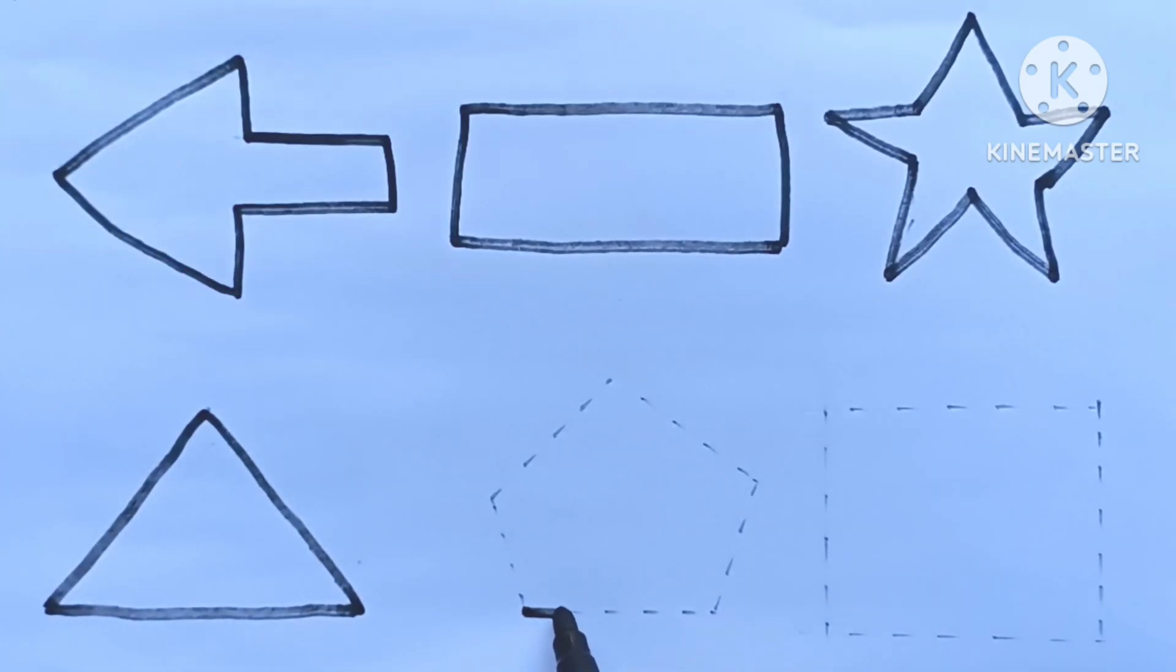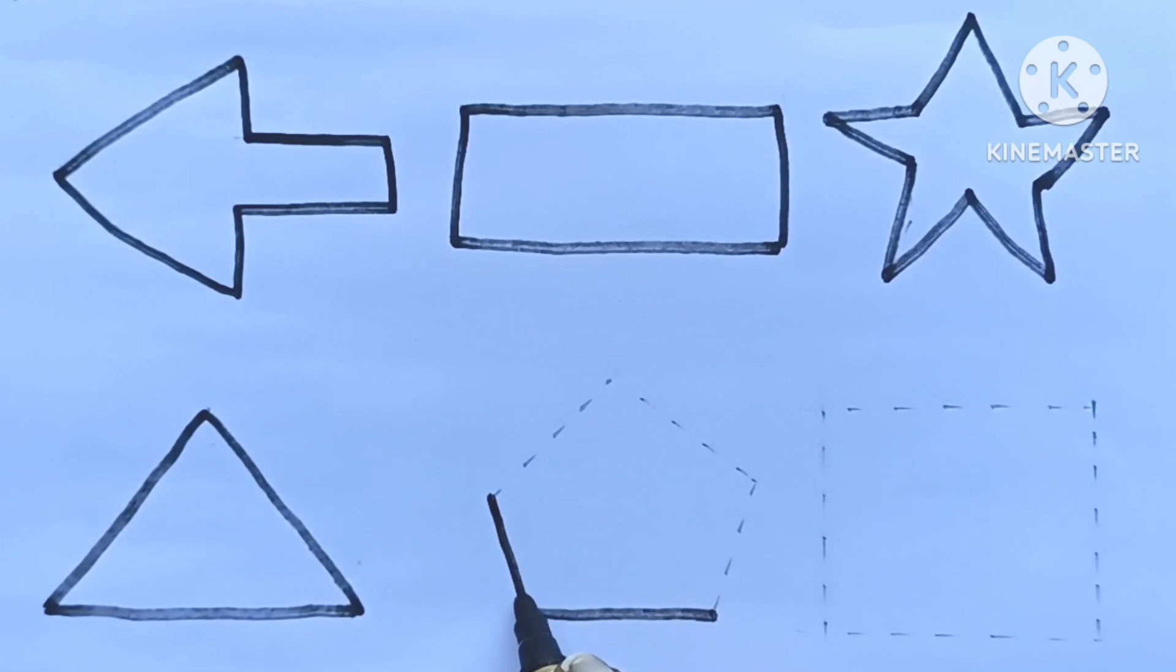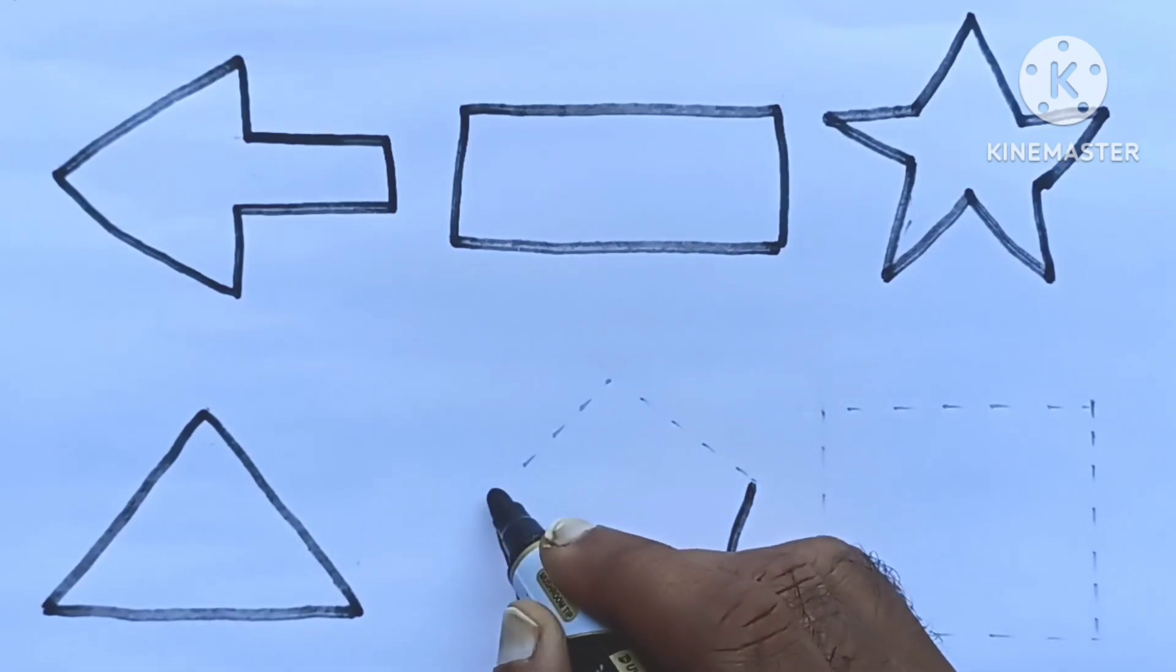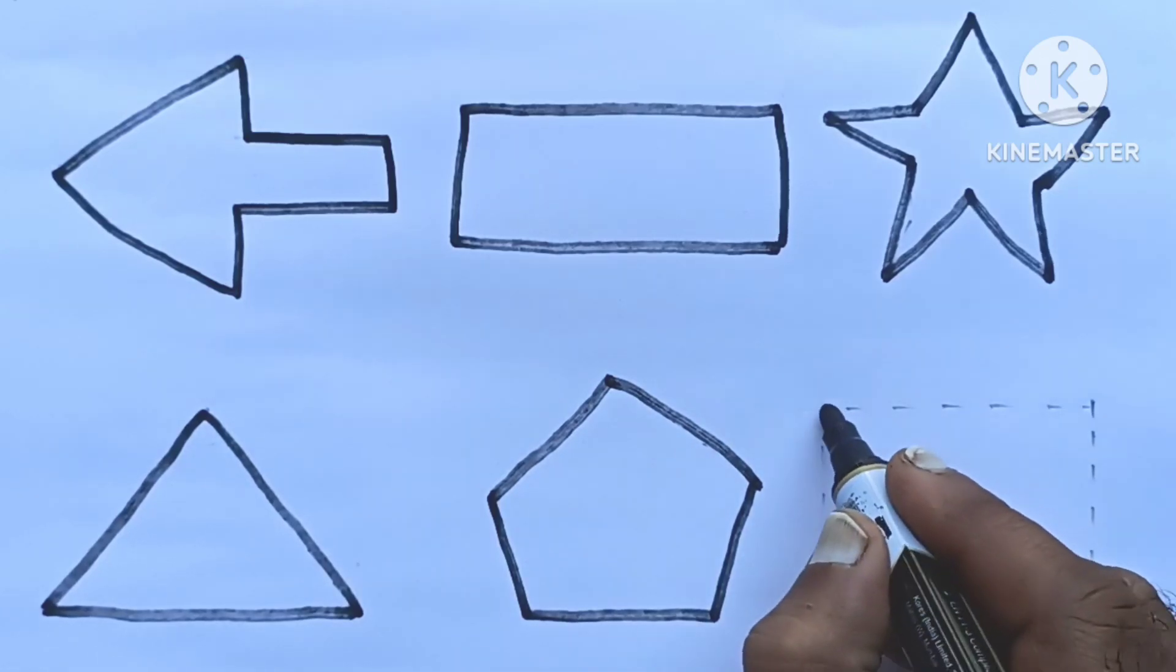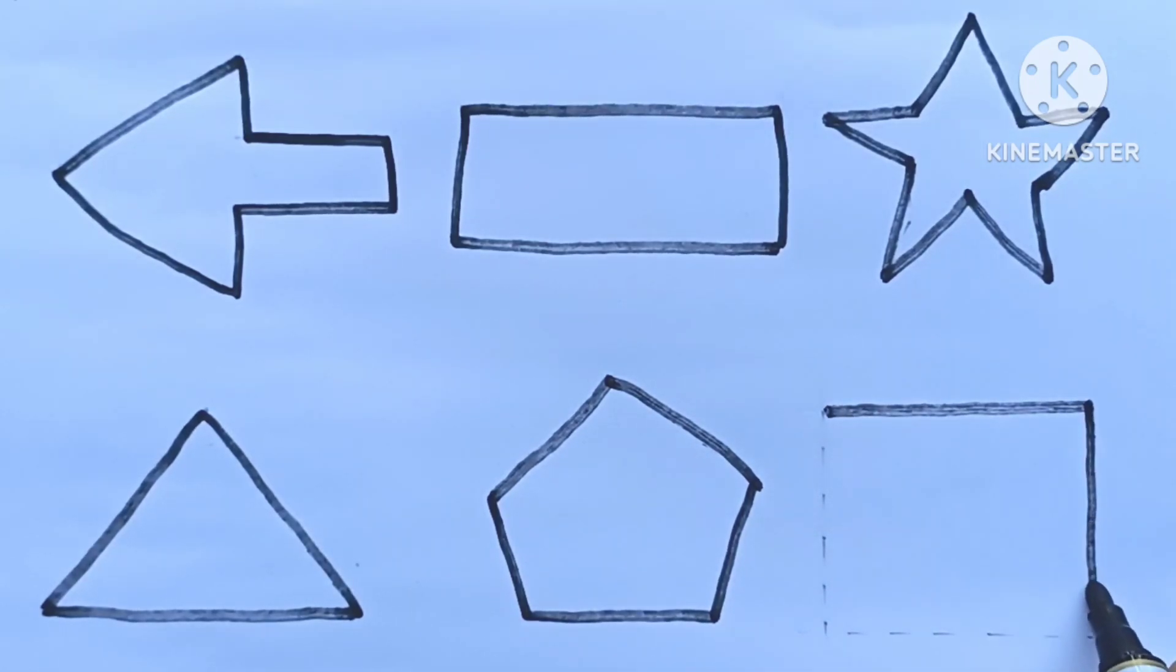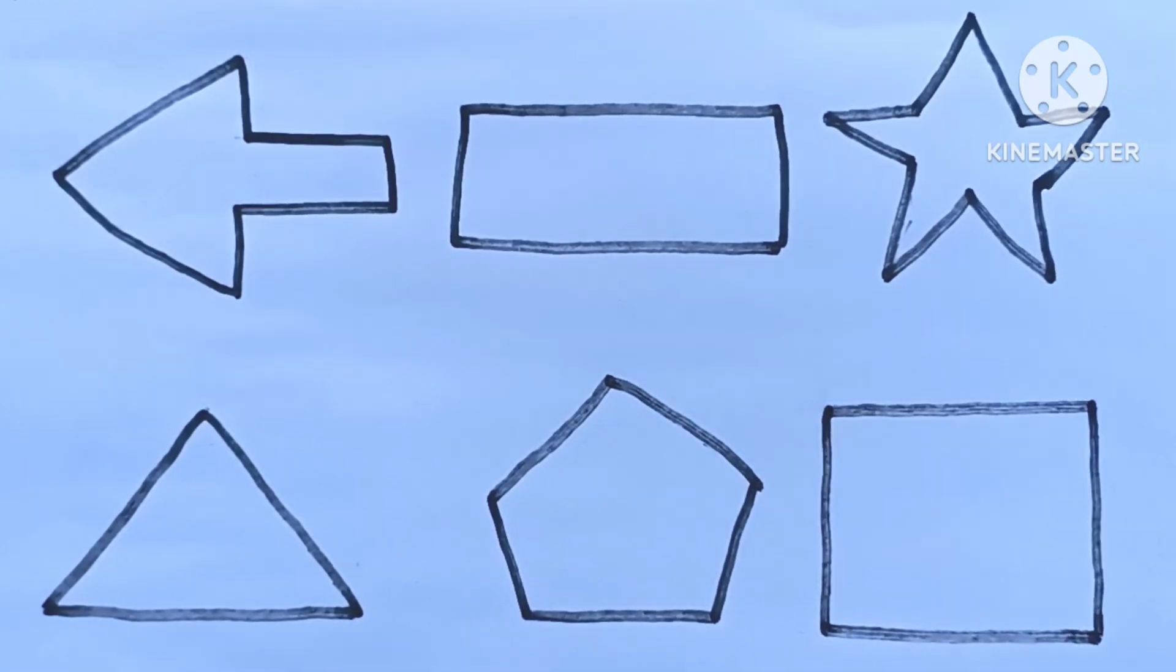Pentagon, we are drawing pentagon. Square, we are drawing a square. Square has four sides. Four sides are equal, square.